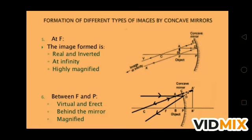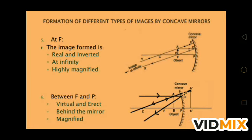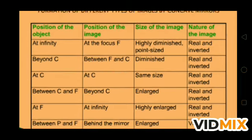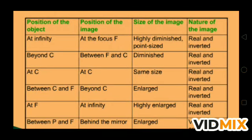These are the properties of images formed at different positions of the object. The six positions are: at infinity, at F, between F and C, at C, beyond C, and between F and P. A table is provided showing position of object, position of image, size of image, and nature of image. For example, object at infinity gives image at focus — highly diminished, point size, real and inverted — so you can revise all positions with their characteristics from this table.